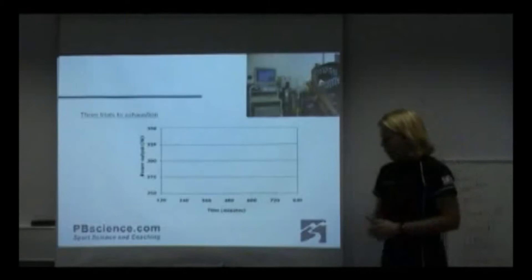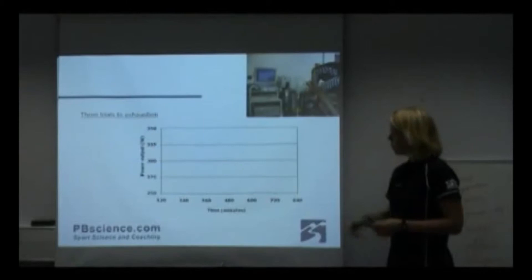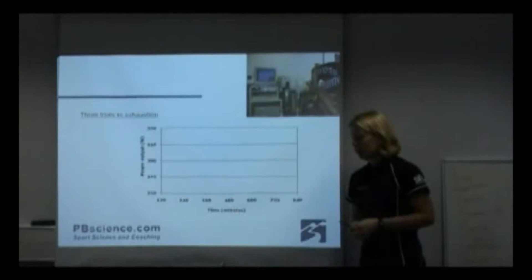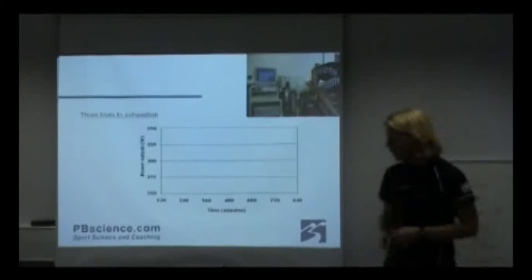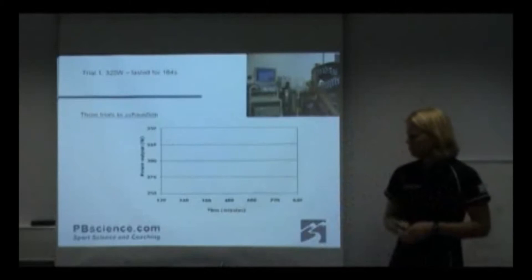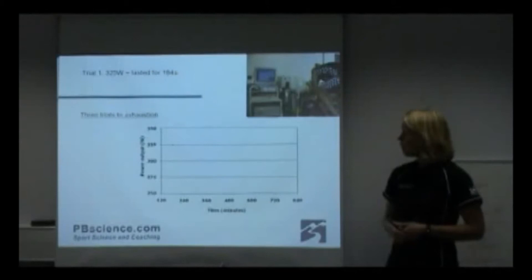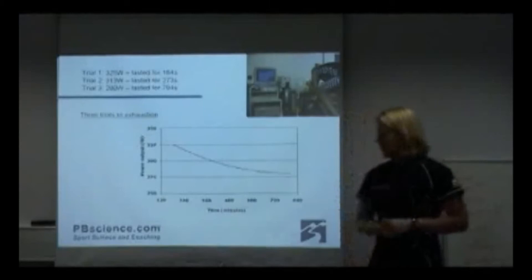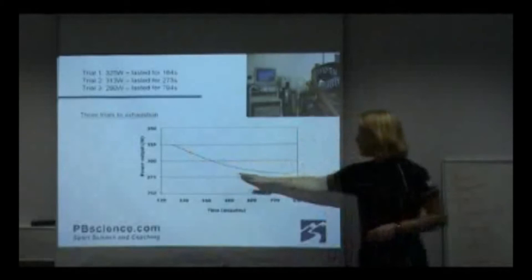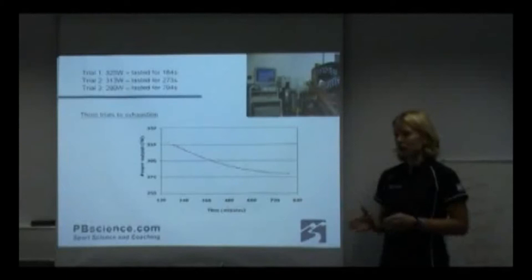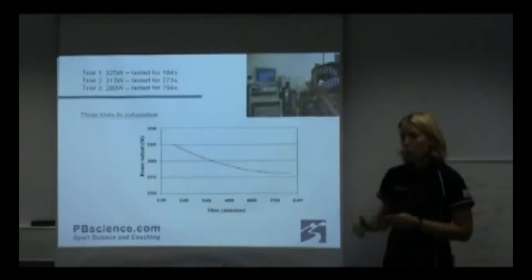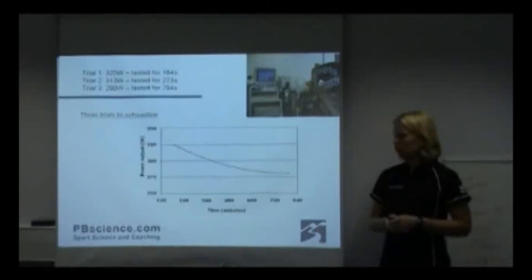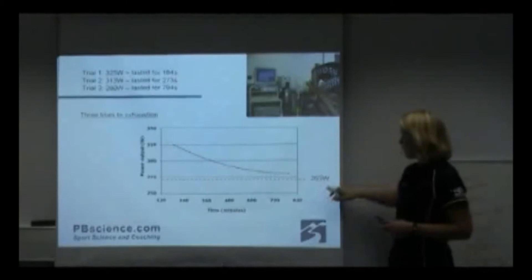I very often used to test myself on critical power during the year, always in my time trial position. For me, trial 1 was 184 seconds — about that three-minute mark — and I was able to hold 325 watts. Trial 2 is a longer trial, but you can see that power output is going down. And by trial 3, 280 watts, you can see that we've got a curve. Interestingly, it's not linear — it's not a straight line, it's a curve. So with the data collected, we don't just draw a straight line through it; we have to do some curve fitting. Then we look at the point at which that curve starts to flatten out, and that's the critical power value.